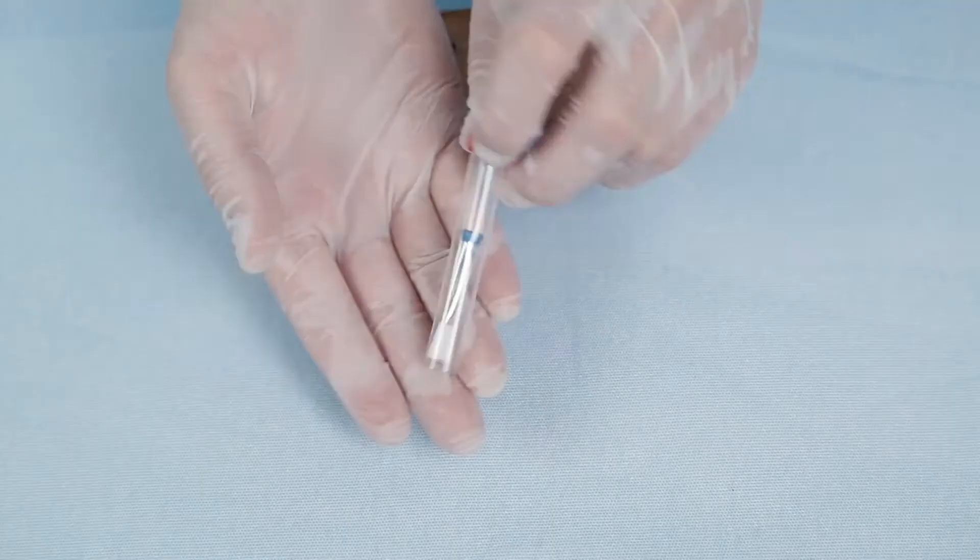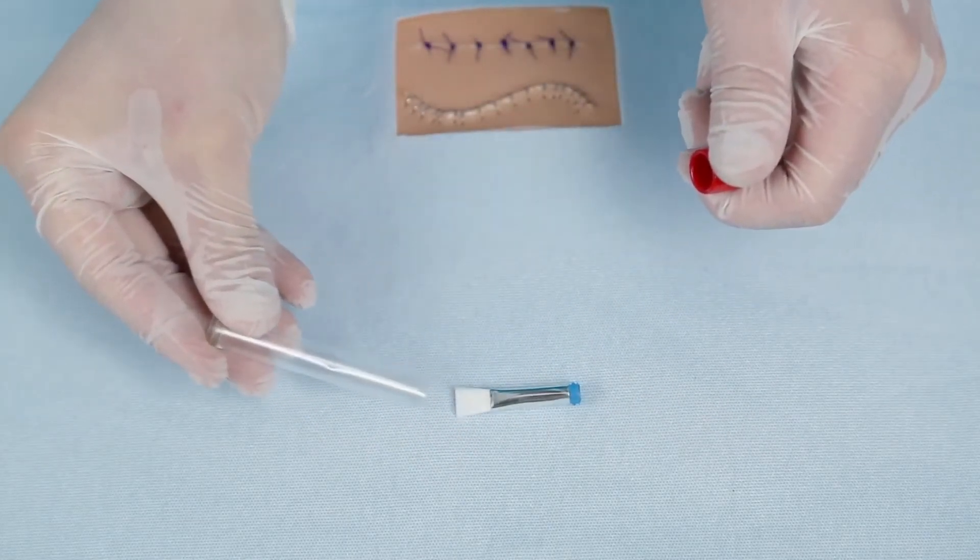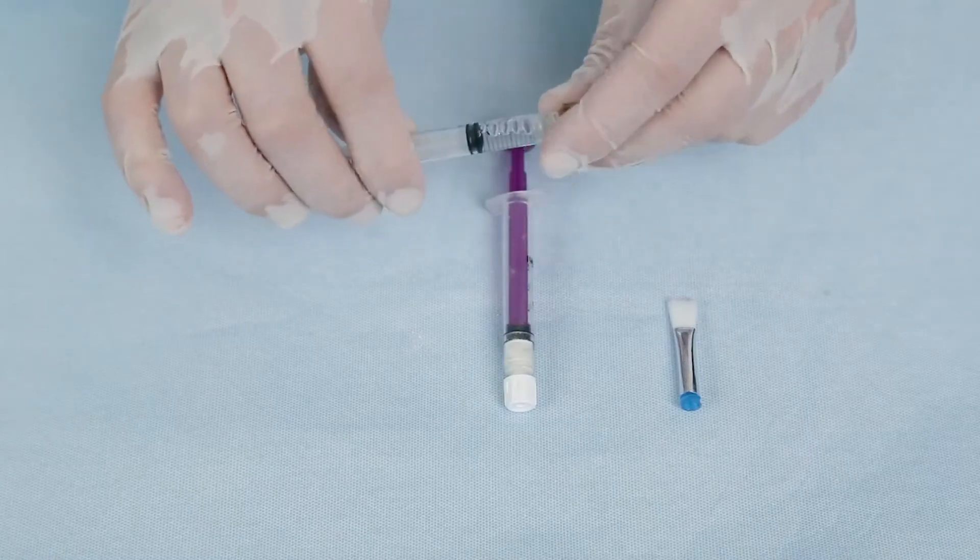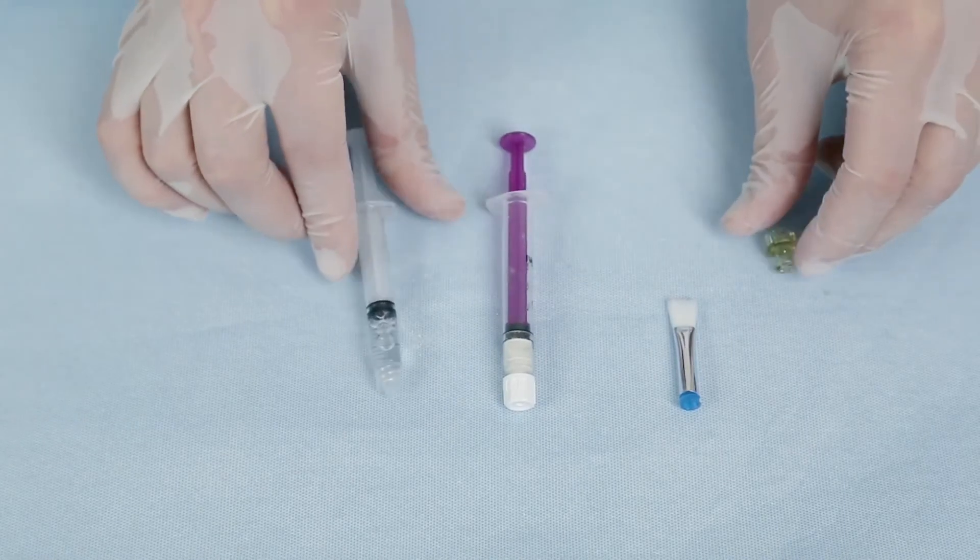Remove the sterile application brush from the brush case and have it ready for use. Remove the caps from the two syringes and connect them together.